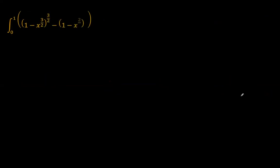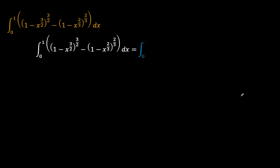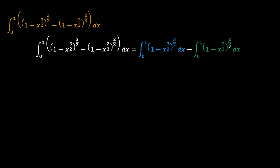This problem, as I said, is super interesting. What I would do is separate this into two separate integrals. The first integral — I'll color it blue — is the integral from x equals 0 to 1 of 1 minus x to the power 3 over 2, all to the power 3 over 2. Minus the integral from x equals 0 to 1 of 1 minus x to the power 2 over 3, to the power 2 over 3. We'll use color coding to separate these two integrals.